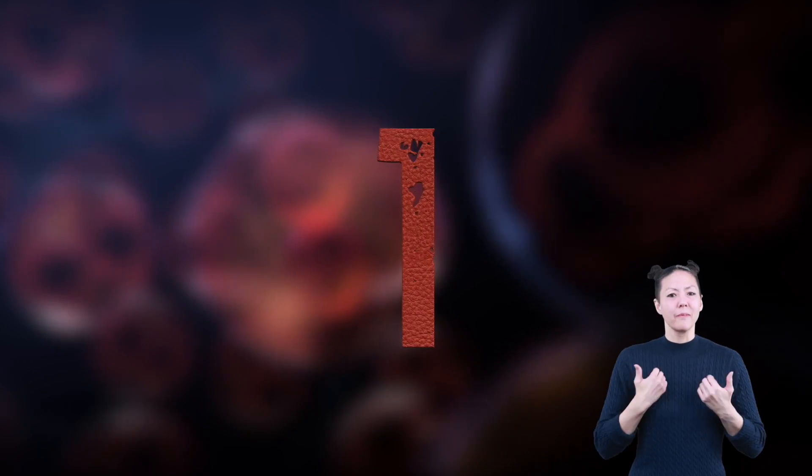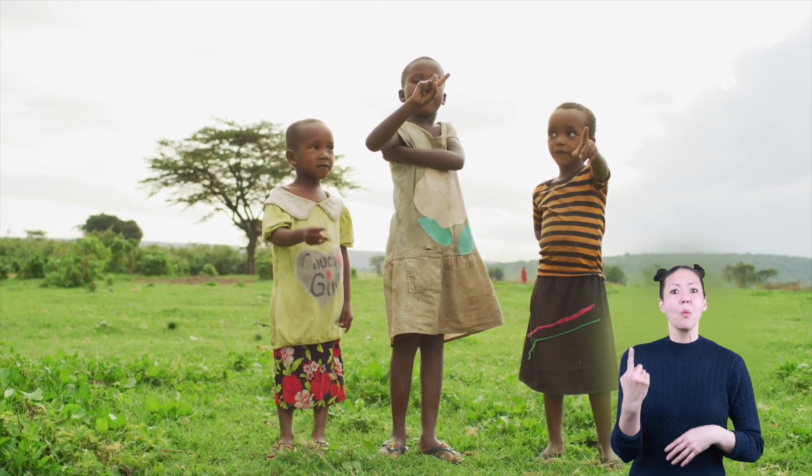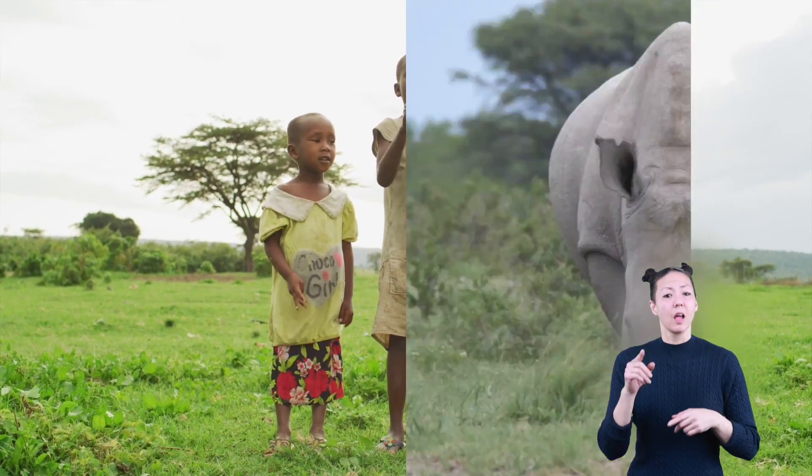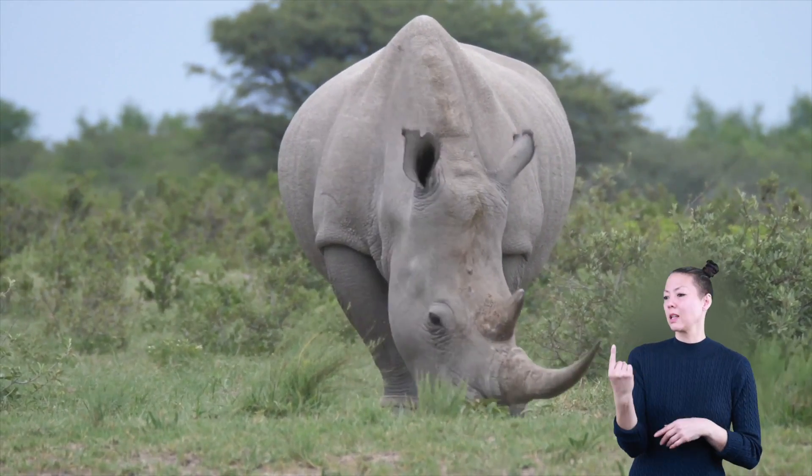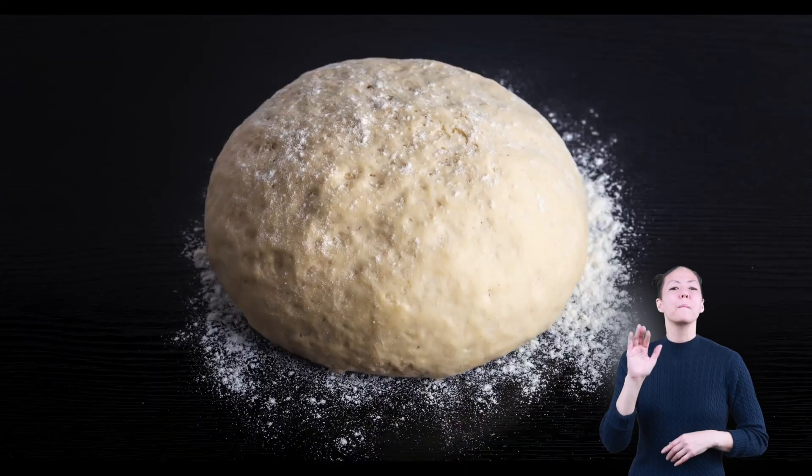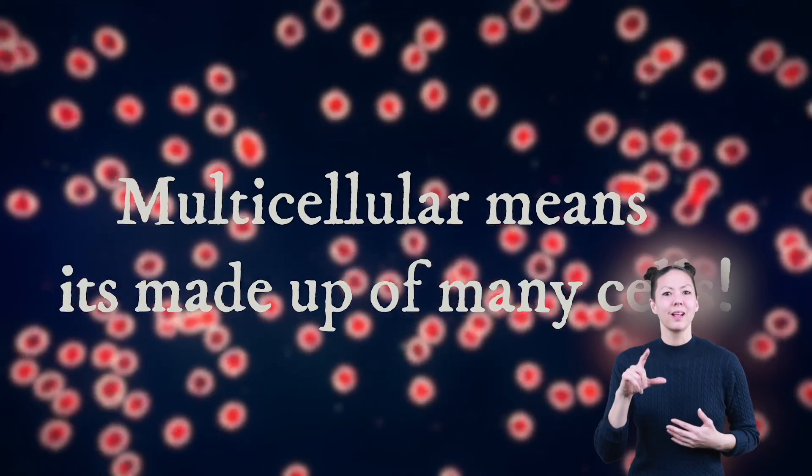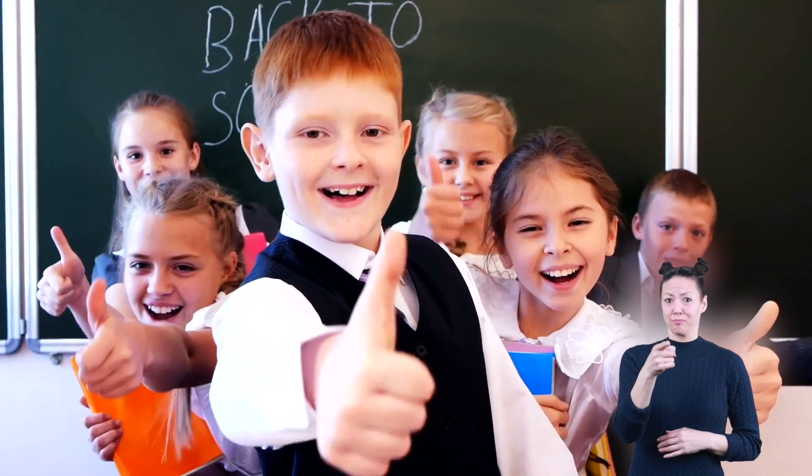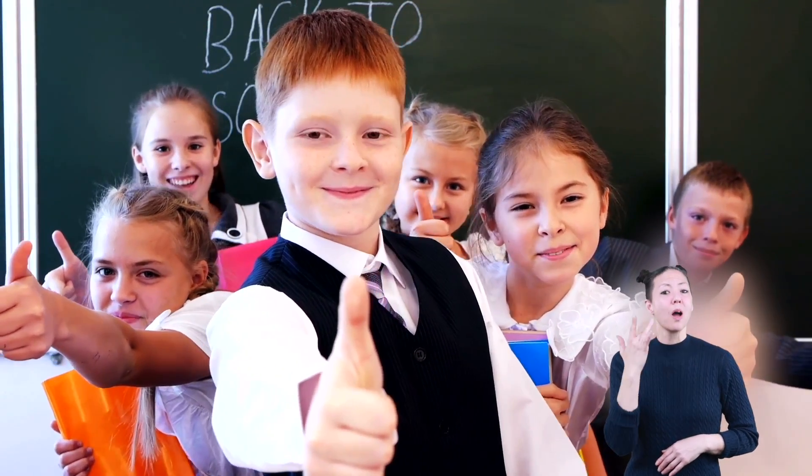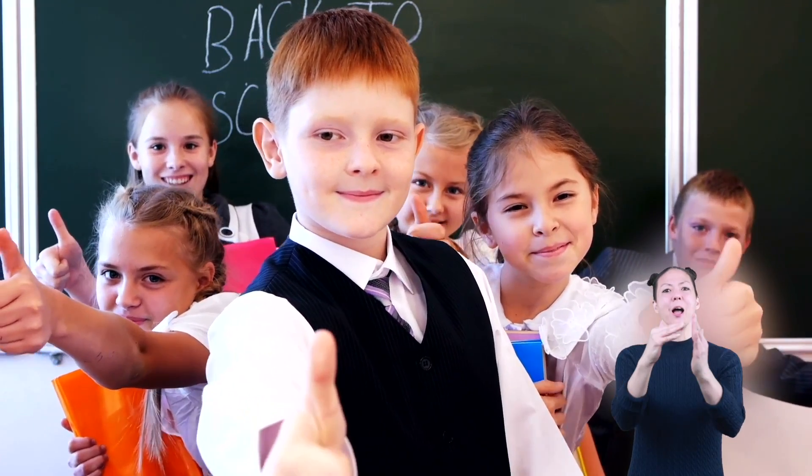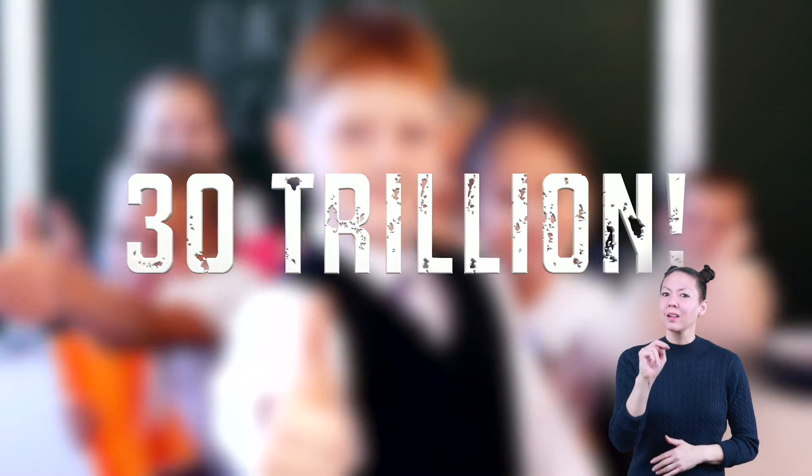There are three things that are important to remember about cells. One, all living things are made of one or more cells. Unicellular means it is a single celled organism like bacteria or yeast. Multicellular means it's made up of many cells. You are multicellular because it took many cells to make you. In fact, it took 30 trillion cells!